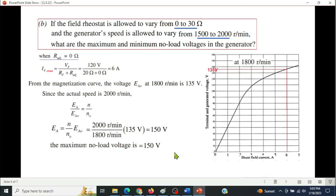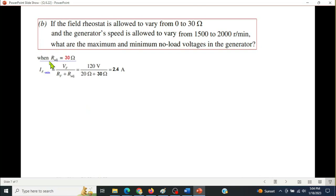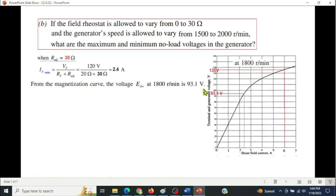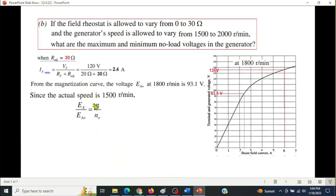For R adjustment of 30, the current is different. Calculate, the current is 2.4 ampere. Plot on the graph, from that EA zero is 93.1 volt. Now we calculate actual EA. EA is 93.1 volt at EA zero. So what is actually EA? Again use the formula. We use fifteen hundred because EA RPM is low, so induced voltage is low. This is the minimum case.